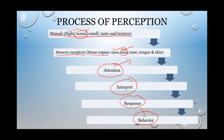Each stimulus will be received by the sensory receptor. As soon as you receive it, your attention tends towards it, you interpret the data, you respond, and then you behave. Behavior is always an outcome of all the factors — just as when discussing personality and attitude, behavior is an outcome; even in perception, behavior is an outcome. How you receive, attend, analyze, interpret, and respond determines how you behave. This is how the perception process works.